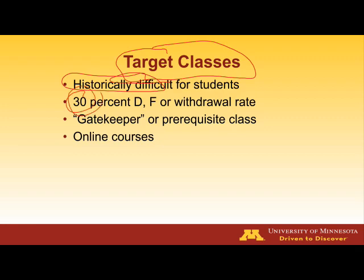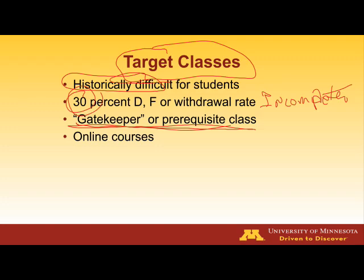So we target those courses and provide supplemental services. There's nothing magic about 30%, but a 30% rate of Ds, Fs, Ws, and incompletes tends to indicate a class that is presenting itself as difficult, and most students already know it. Also, there's the idea of being a gatekeeper or prerequisite class. Right now, at the time I'm recording this video, we're dealing with the flu pandemic in the United States, and lots of college classes are converting to online within a matter of days. Academic support programs are also moving online — online courses can be challenging, and academic support can be provided online, but that's a whole other series of videos.